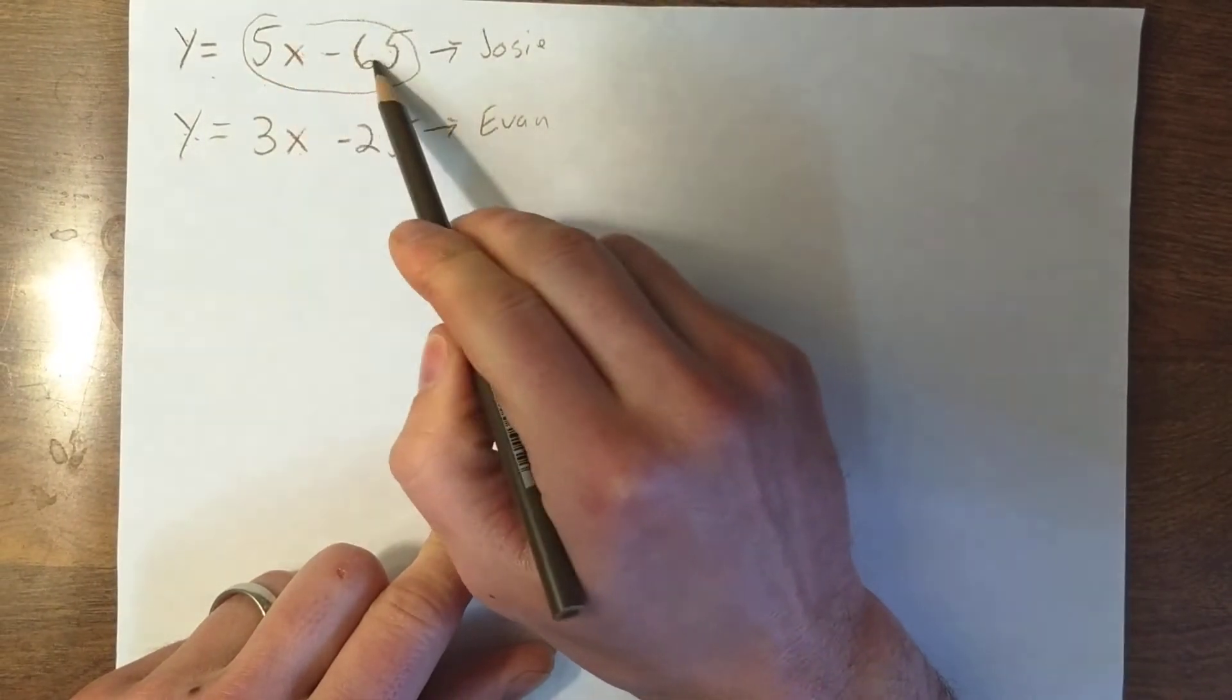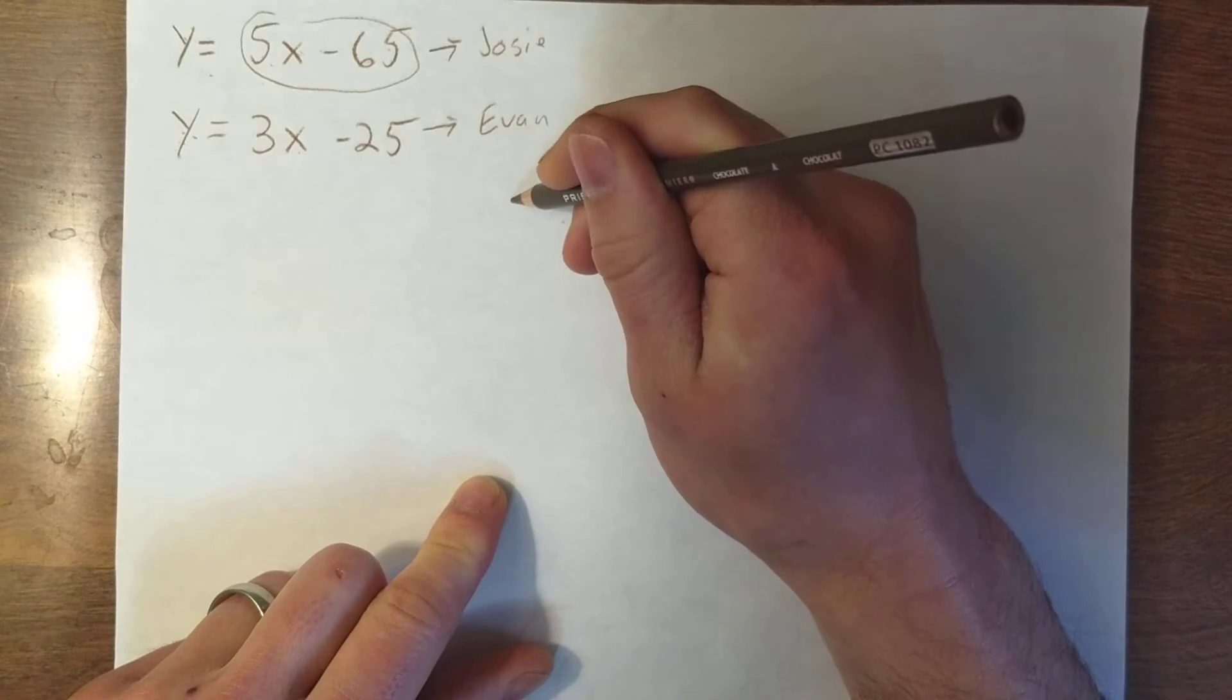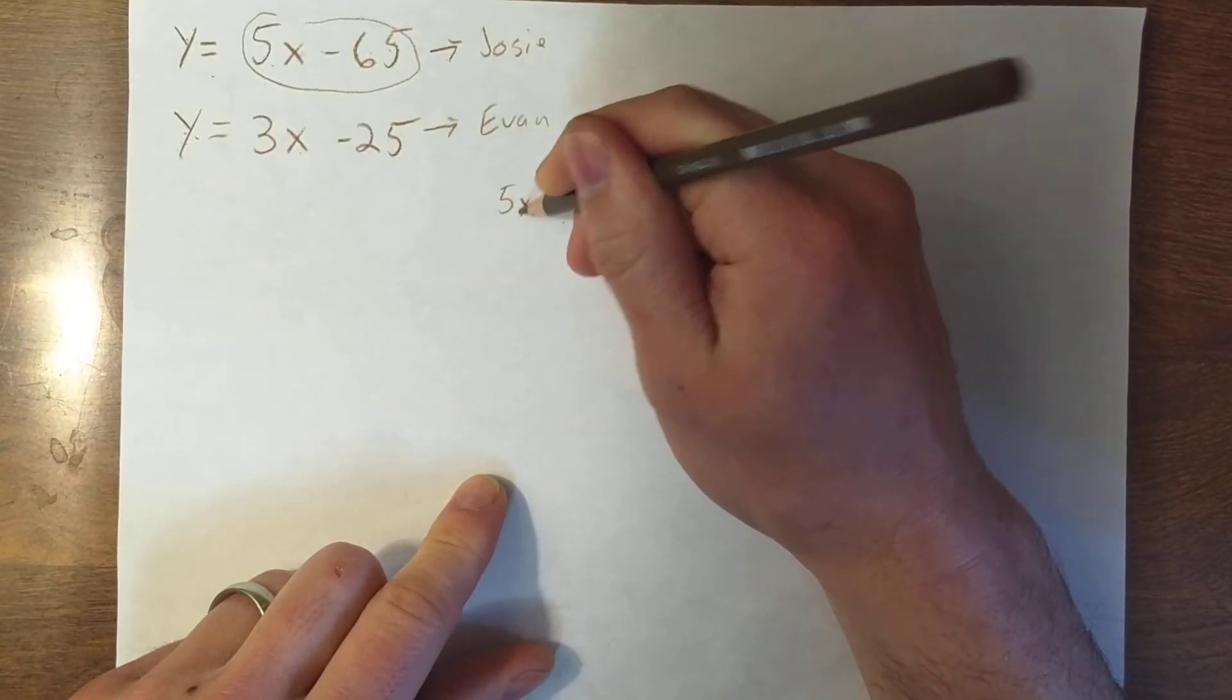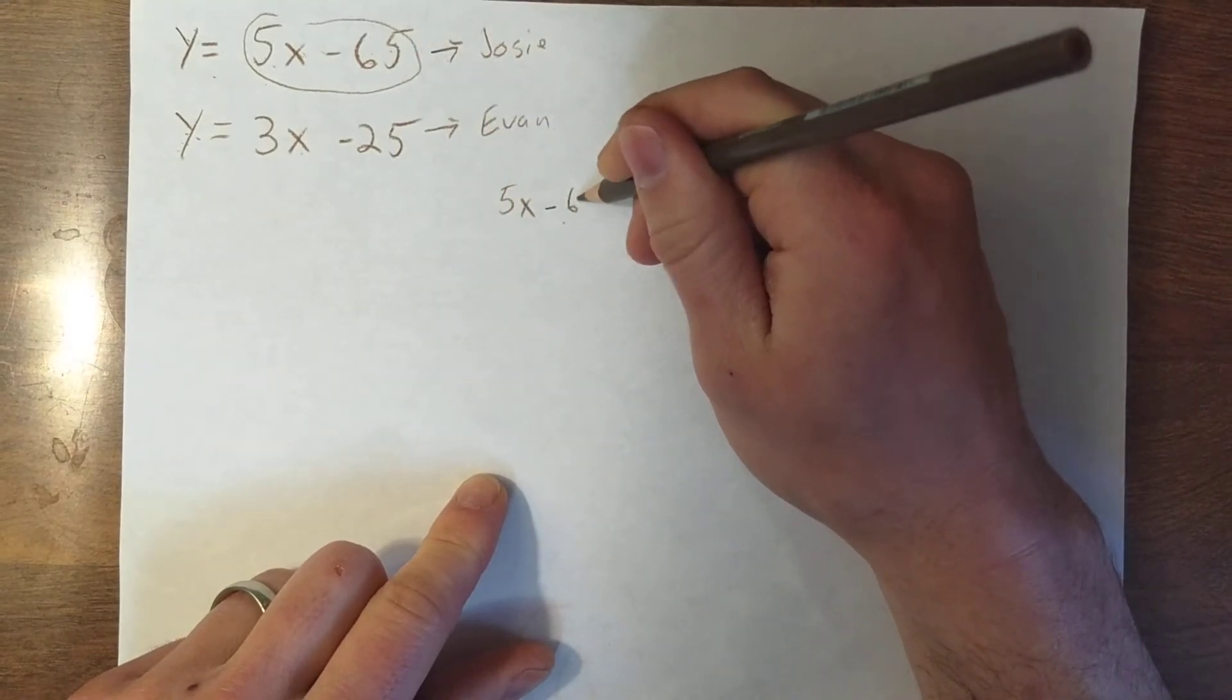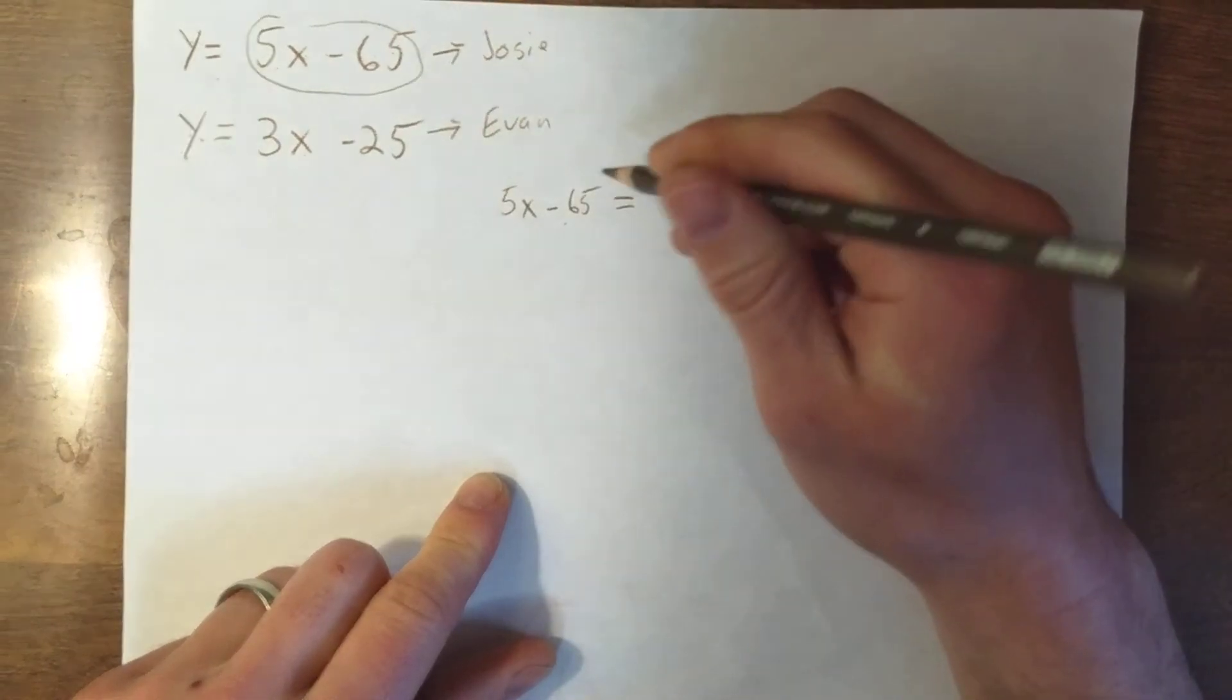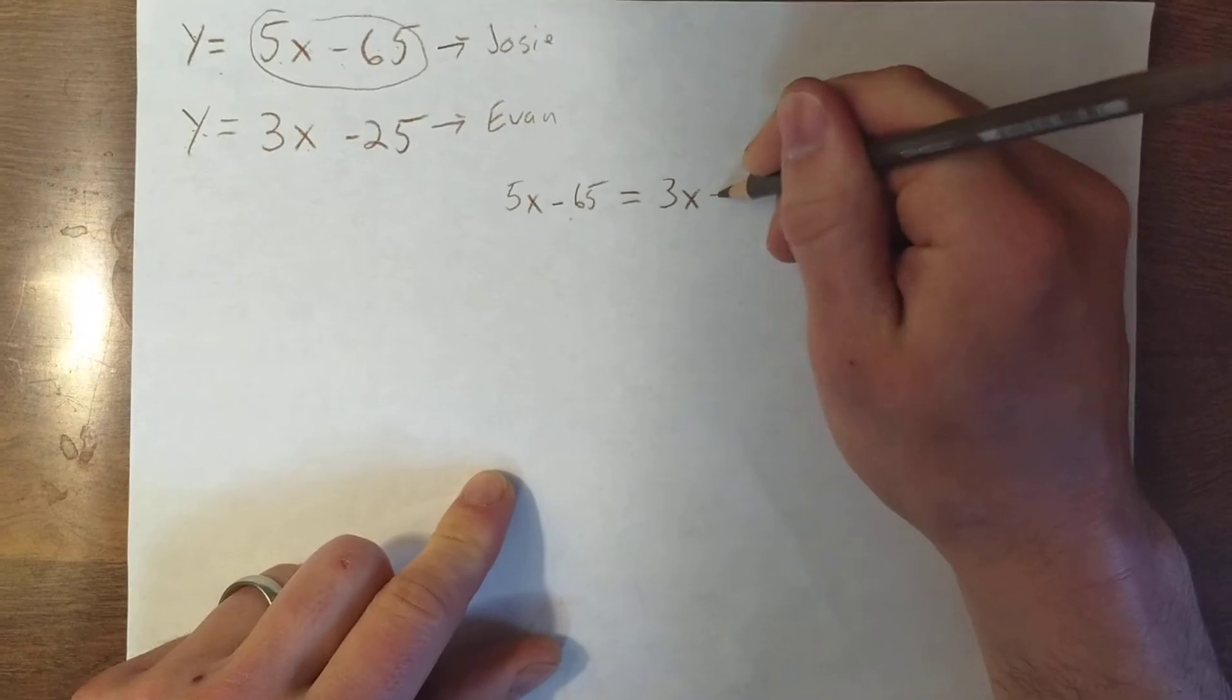What I mean by that is I'm going to put this equation in for this y. So why we do this is we can't solve equations with multiple variables. We need it to only be one variable so we can figure out what it has to equal. So what I'm doing is putting 5x minus 65 in for this y, and I know that this has to equal 3x minus 25.